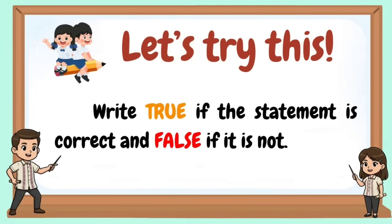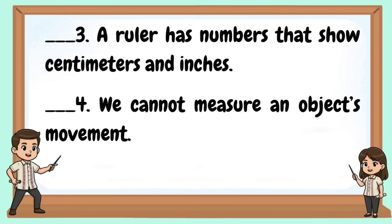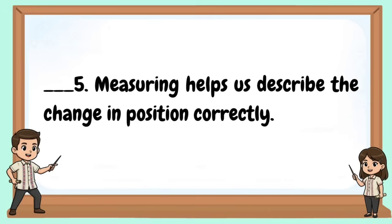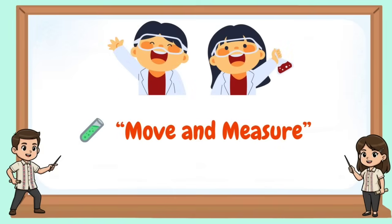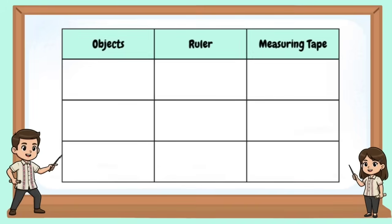Let's try this. Write true if the statement is correct and false if it's not. Move and measure.